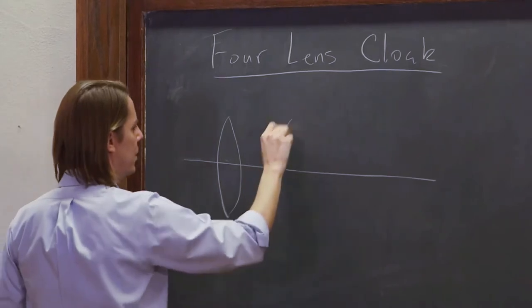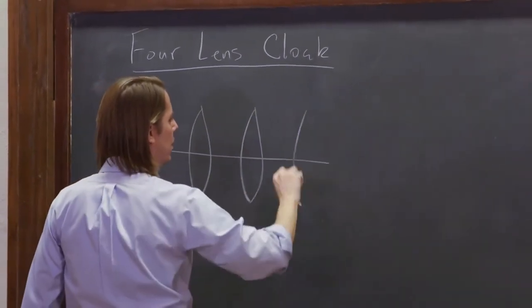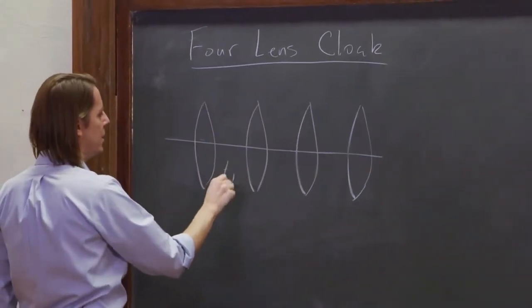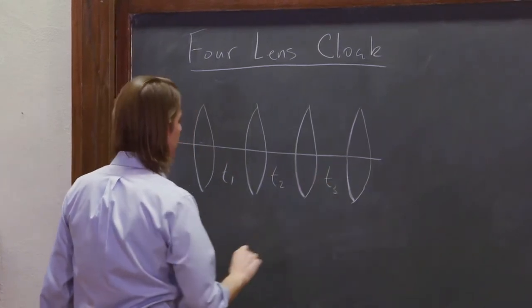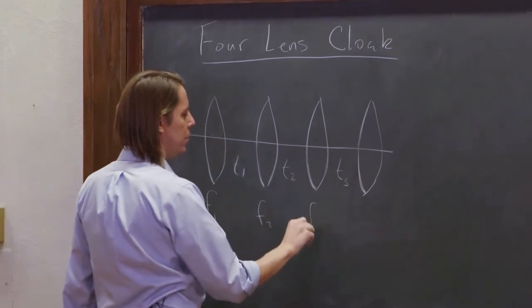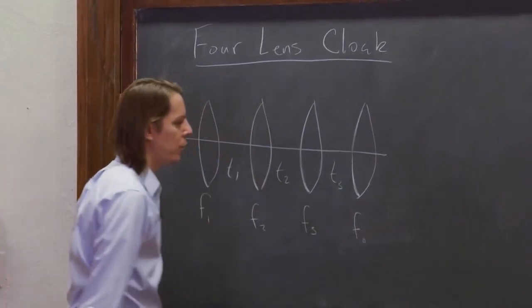Let me draw an optical axis so I can keep them all straight. And there'll be a lens one, two, three, and four. And they'll be separated by T1, T2, and T3. And they'll have focal length one, focal length two, focal length three, and focal length four.